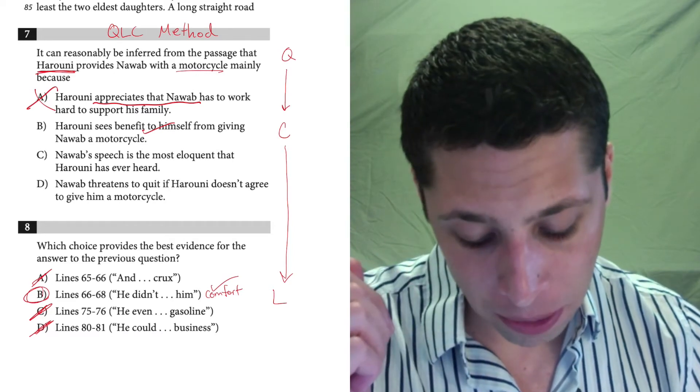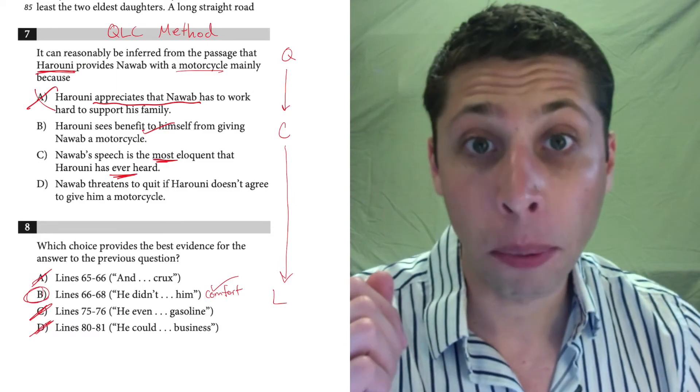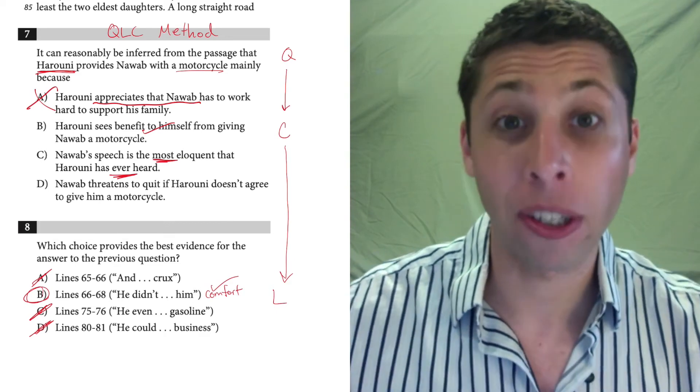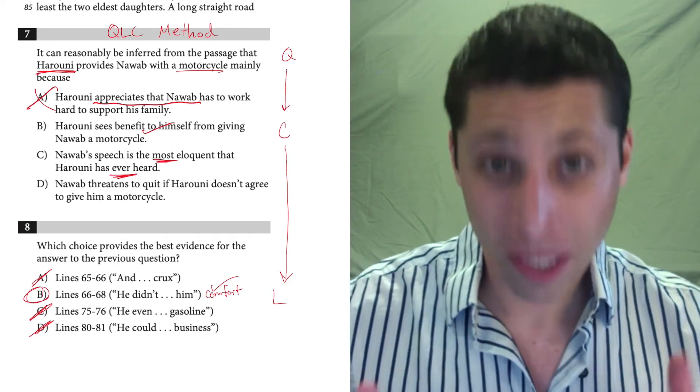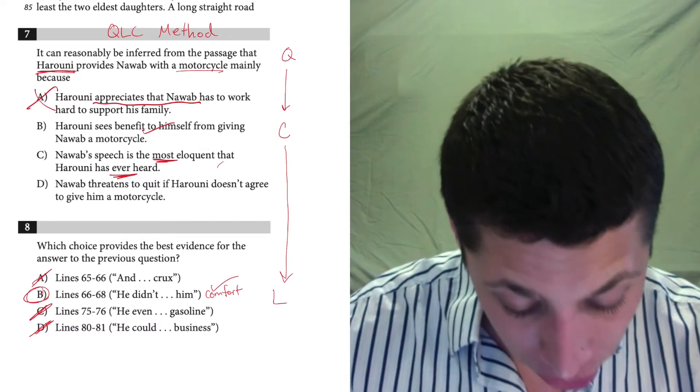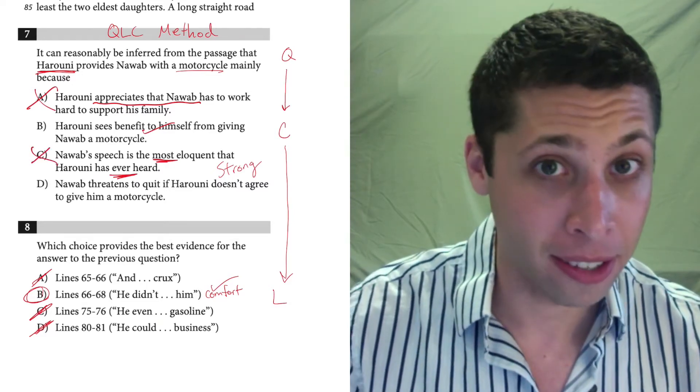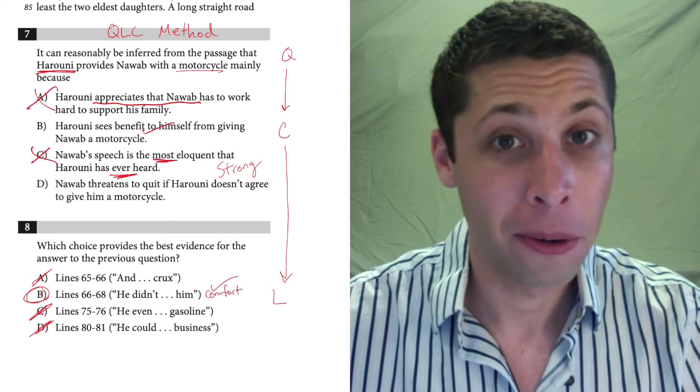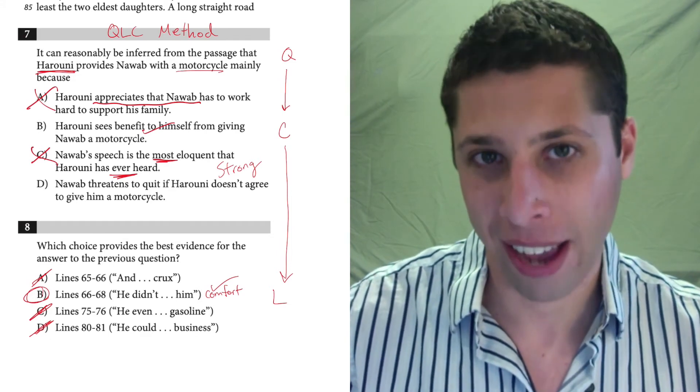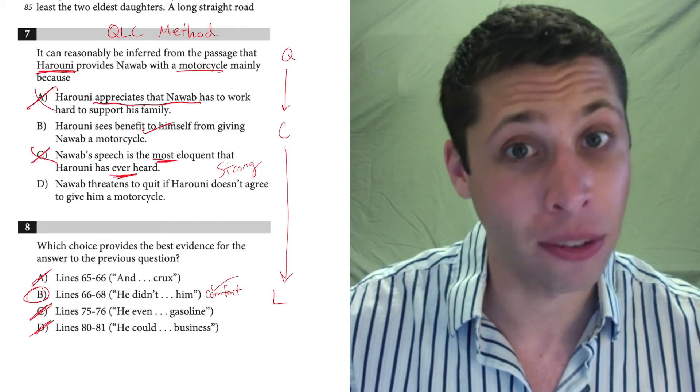Choice C, Nawab's speech is the most eloquent that Haruni has ever heard. Ooh, some real problems from an SAT perspective here. We're not aware of all of Haruni's life. We have no idea what other kinds of speeches he has listened to. To say that this is the most eloquent speech he has ever heard is really, really strong in a very bad way. This is not proven by these lines. It may be true. I don't think it is, but it may be true, but it's not supported by these lines as evidence. So, we have to be really careful with words like most and that he ever heard. That's really intense.